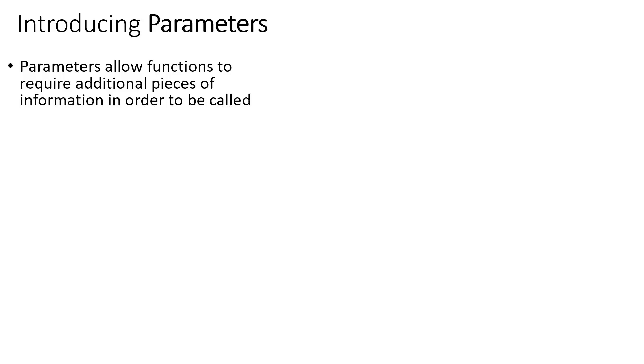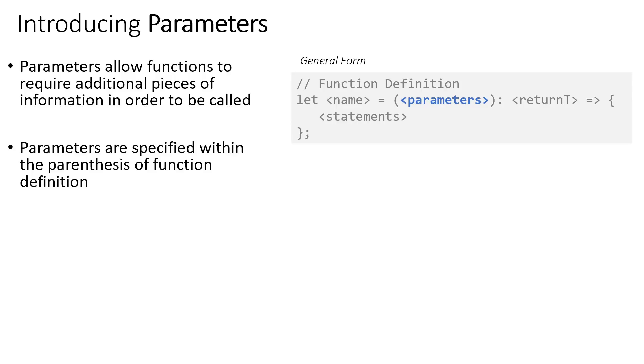Parameters allow functions to require additional pieces of information in order to be called. They're a way that the function is able to specify, hey, I need some extra information in order to be useful. Parameters are specified inside of the parentheses of a function definition.